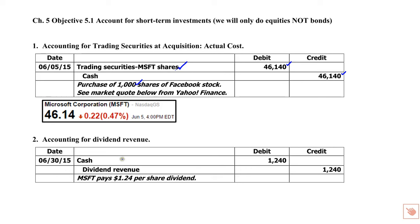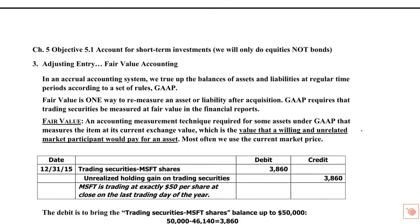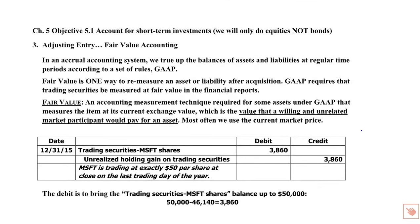At some point after the purchase, Microsoft pays a dividend to the corporation that invested in their shares. They receive the cash — it's $1.24 per share, so $1,240 in cash — and you would recognize that recorded as dividend revenue upon receipt.